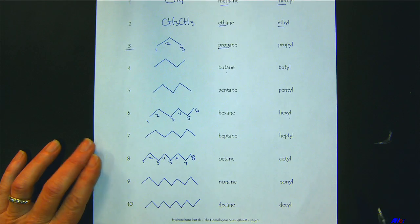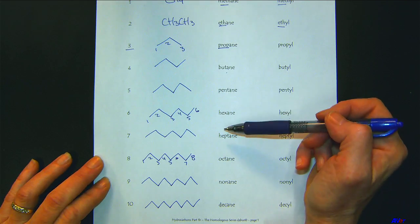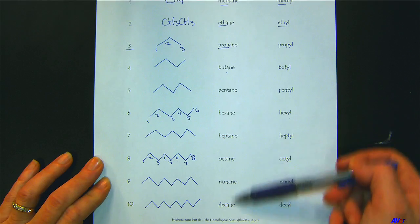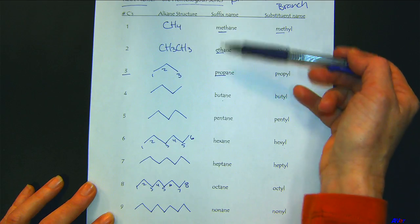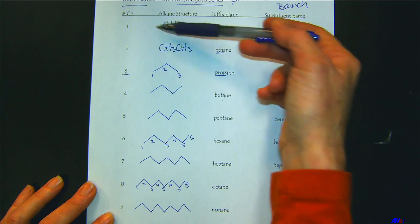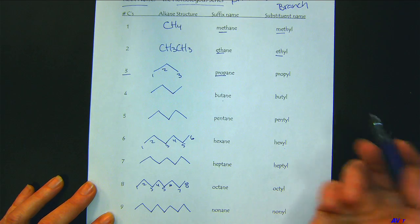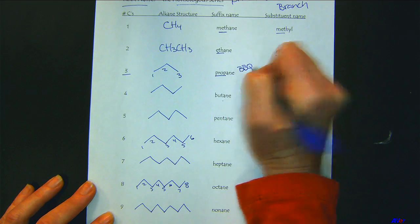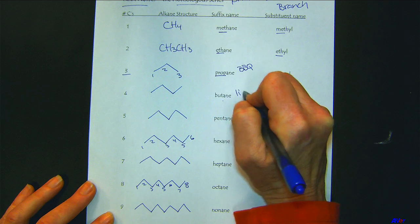You should have most of the homologous series already memorized — pentane through ten you already know. The new ones are meth, eth, prop, and but for one, two, three, and four. Propane is a big deal — that's the barbecue gas. And butane is what we use with lighters.